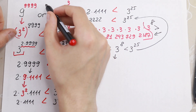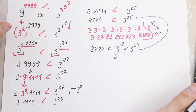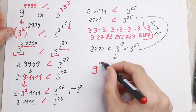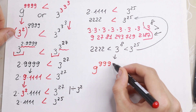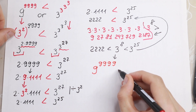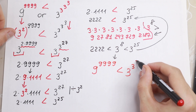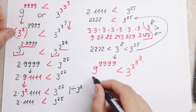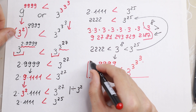So our sign goes in that direction. 9 to the power 9^(9^9) is less than 3 to the power 3^(3^3). And this is our answer.